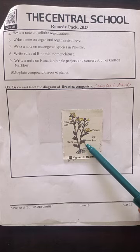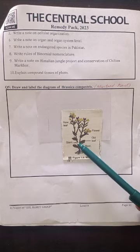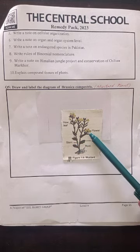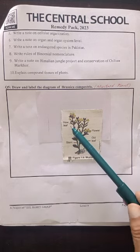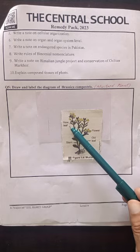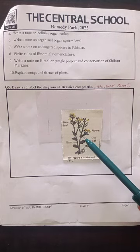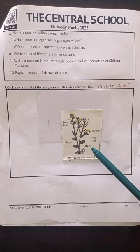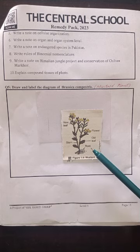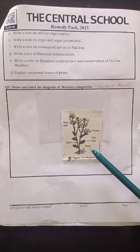We can see that these are the roots of the plant. This is an old leaf and this is the main stem of the plant. These are the flowers and these are small new leaves of the plant. You can practice this diagram on a rough page, and when you have completed your practice, draw a fair diagram on this page and label these parts. Thank you.